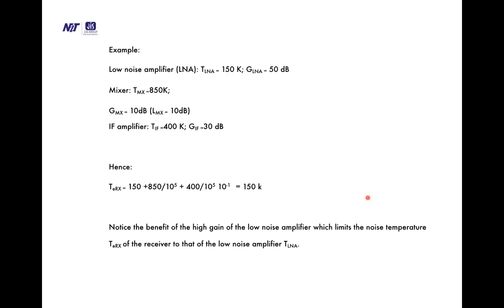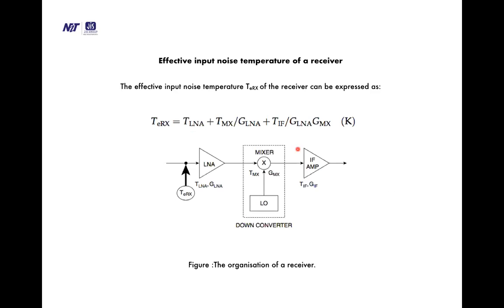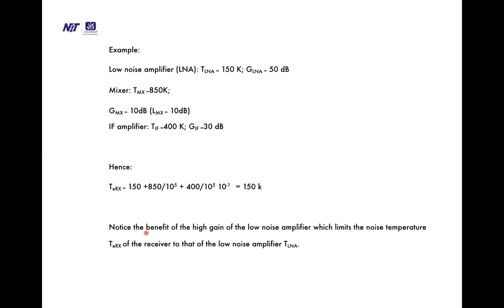As a numerical example: LNA noise temperature T_LNA = 150 K, gain G_LNA = 50 dB; mixer temperature T_MX = 850 K, gain G_MX = 10 dB, loss L_MX = 10 dB; IF amplifier T_IF = 40 K, gain G_IF = 30 dB. Substituting these values into the receiver noise temperature equation yields approximately 150 K. This demonstrates the benefit of high LNA gain, which limits the receiver noise temperature to essentially that of the low noise amplifier, T_LNA.